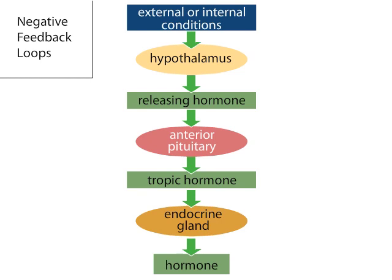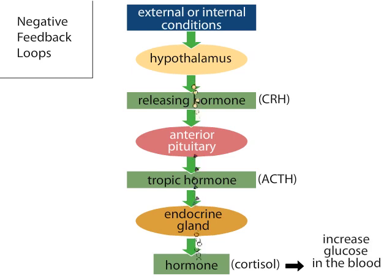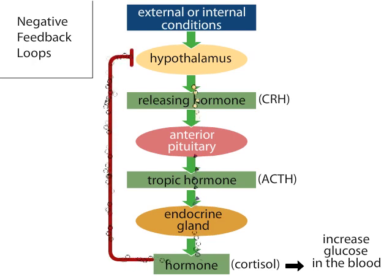In response to stress signals, the hypothalamus releases corticotropin-releasing hormone (CRH). CRH triggers the anterior pituitary to release adrenocorticotropic hormone (ACTH). ACTH, in turn, triggers the adrenal cortex to release a steroid hormone called cortisol. Cortisol has many effects on different target organs in the body, but the primary one is to increase glucose in the blood — an energy resource that allows the body to respond to physiological or psychological stress. In addition to acting on organs and tissues throughout the body, the hormones travel through the bloodstream back to the brain, where they inhibit the release of CRH.